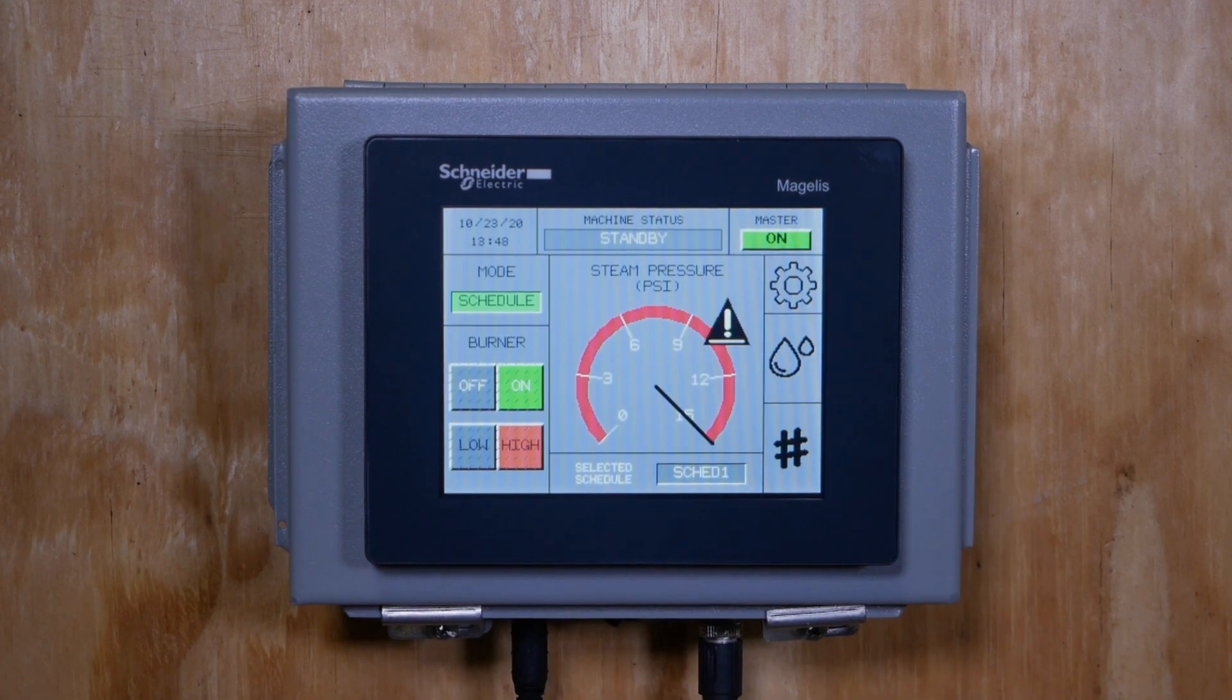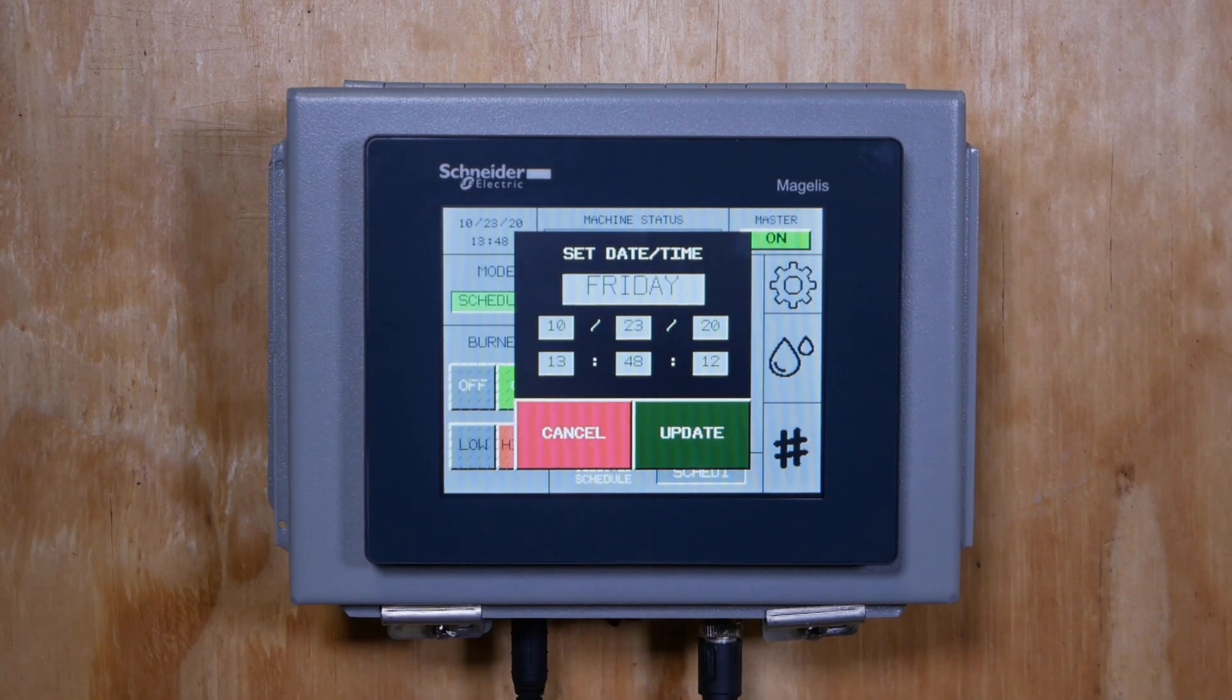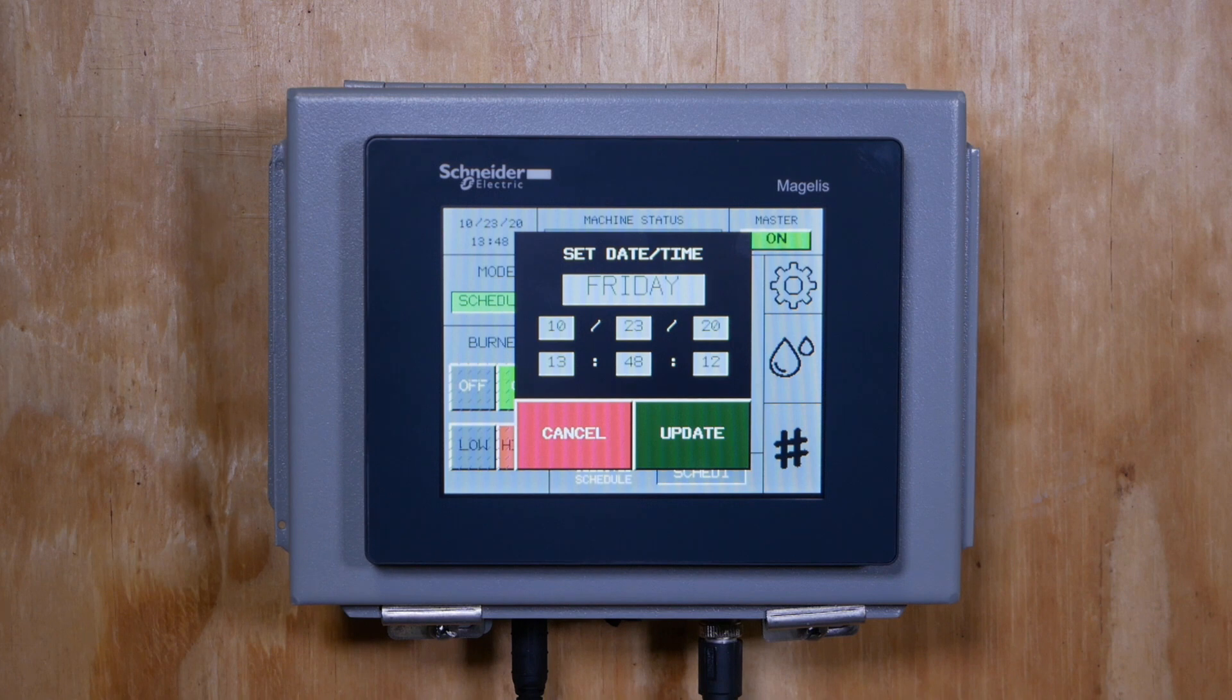In the upper left corner of the screen shows the date and time. Tapping it allows you to manually adjust. It is important to set the time correctly to ensure the scheduling function of your controller works properly.